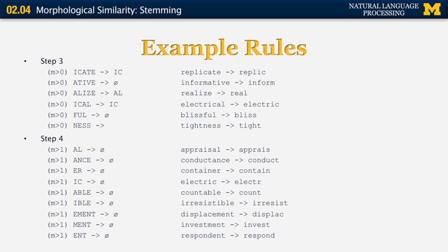Step 3 includes more rules. '-icate' turns into '-ic', so 'replicate' becomes 'replic'. '-ative' becomes blank, meaning it's removed entirely, so 'informative' becomes 'inform'. In step 4, '-al' at the end typically indicates a noun or adjective and can be removed — so 'appraisal' becomes 'appraise'. '-ance' can also be removed, turning 'conductance' into 'conduct'. The rule for '-er' at the end, for words with measure greater than one, removes the suffix entirely, so 'container' becomes 'contain'.